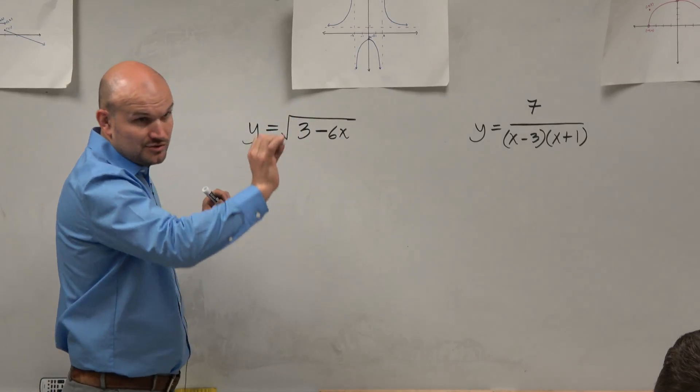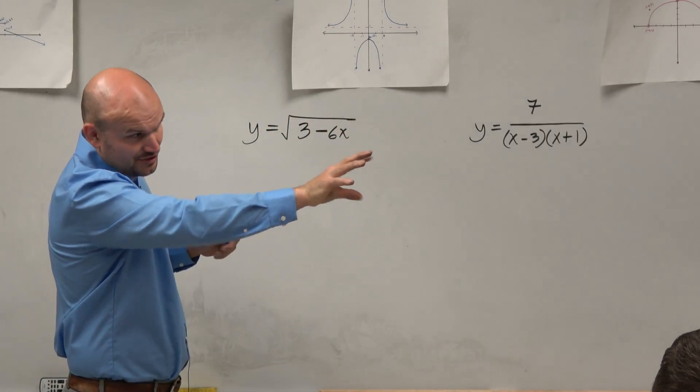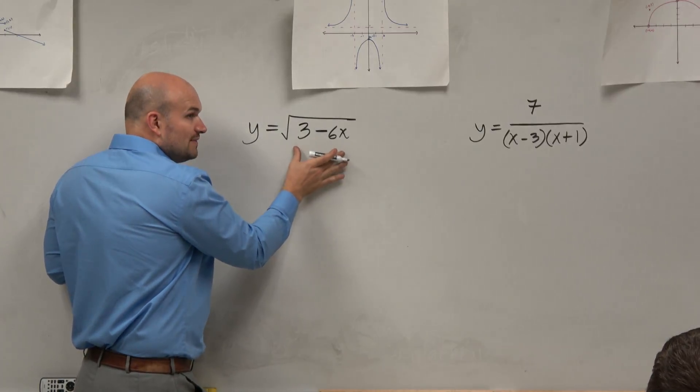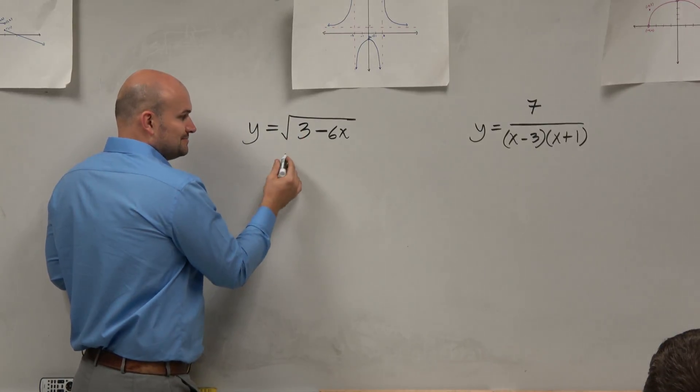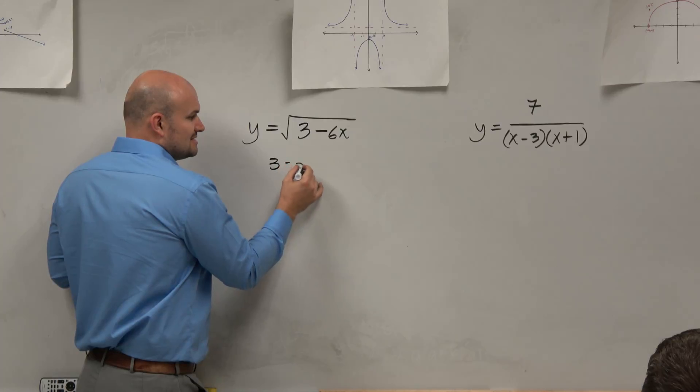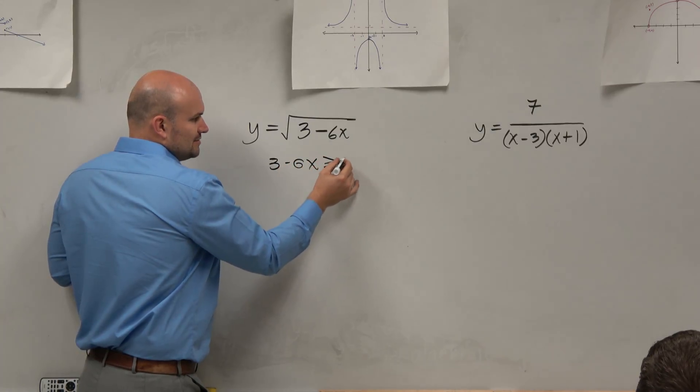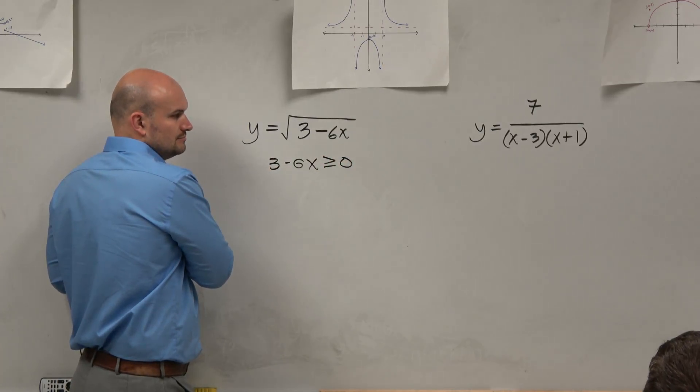So just like I had on the notes, which if you haven't already started writing down, make sure you guys have that written down, I want the radicand to be greater than or equal to 0. So I have 3 minus 6x greater than or equal to 0, all right?